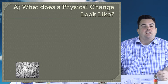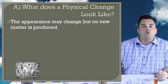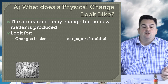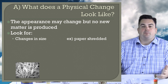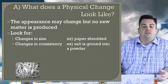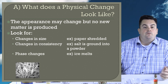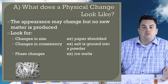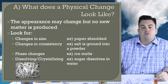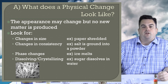What does a physical change look like? The appearance may change, but no new matter is produced. What to look for: changes in size, like paper being shredded; changes in consistency, like salt being ground into a powder; phase changes, like ice melting; dissolving and crystallization, which are opposites of each other, like sugar dissolving in water.